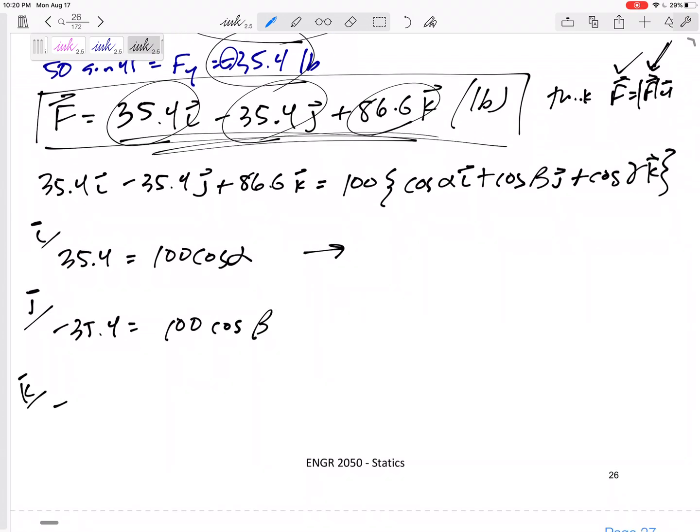35.4 equals 100 cosine alpha. Negative 35.4 equals 100 cosine beta. The K positive, let's see, 86.6 equals 100 cosine gamma. Put those into our calculator to find alpha 69.27, beta 110.73, and gamma 30 degrees.